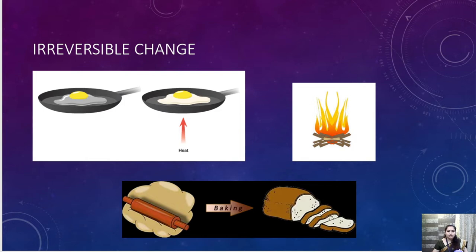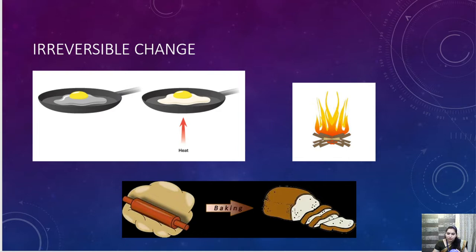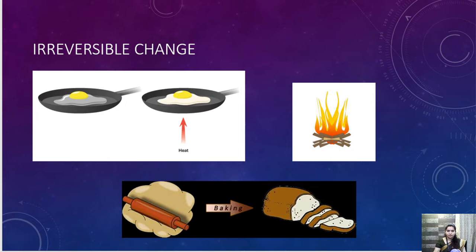For example, making an omelette: when you break the egg, put it in a pan and heat it, the raw egg is converted into an omelette. But you cannot convert this omelette back to an egg — so this is an irreversible change. Burning of wood: once you burn wood, you cannot again obtain the same wood. You cannot get that wood back after burning it. So this is an irreversible change.